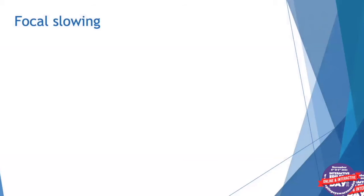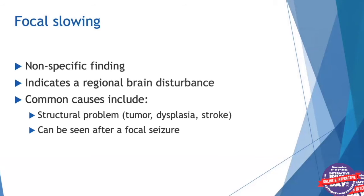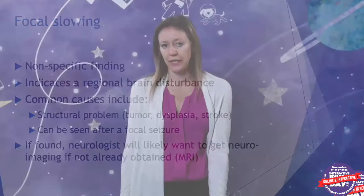We can also have focal slowing, which is another nonspecific finding. It indicates a brain disturbance in just one or several regions rather than the whole brain. Common causes include structural problems such as tumors, developmental abnormalities — sometimes called dysplasia — of brain structure, and strokes. Sometimes we can see slowing of brain waves after a focal onset seizure. If found, the neurologist will likely want to get neuroimaging — typically a brain MRI — to see if there's something structural that explains why the focal slowing is seen on the EEG.